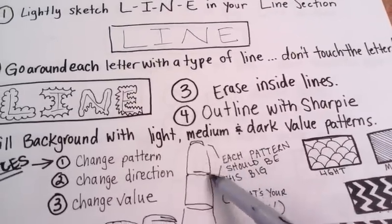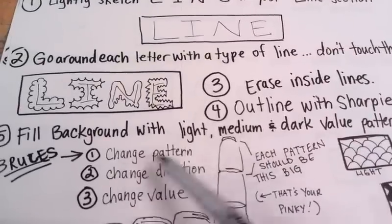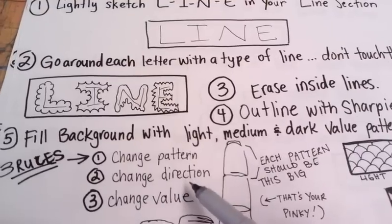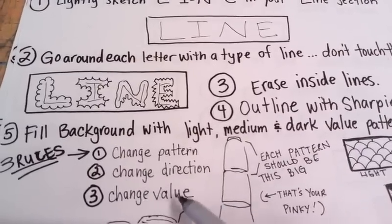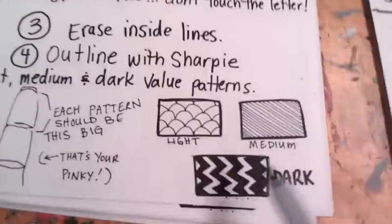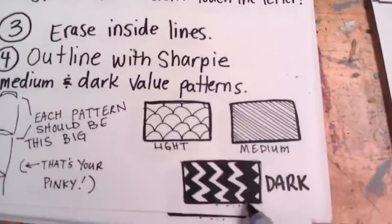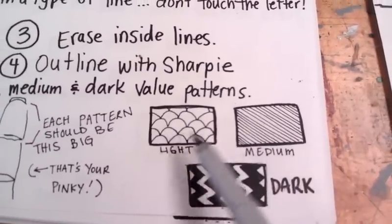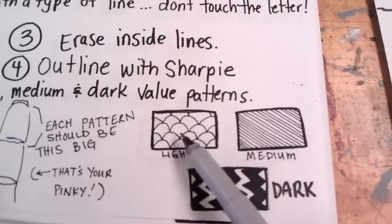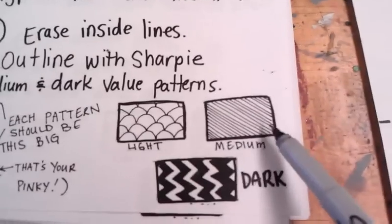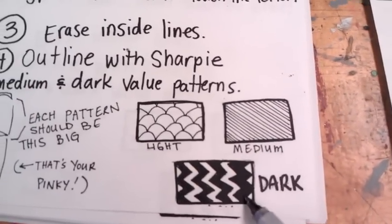Once you've gone this far with a pattern, you're going to change the pattern, change the direction that you were going, and change the value. Here you can see three different types of values with a pattern. So this is a very light pattern because the lines are further apart. This is a medium pattern and this is a dark.